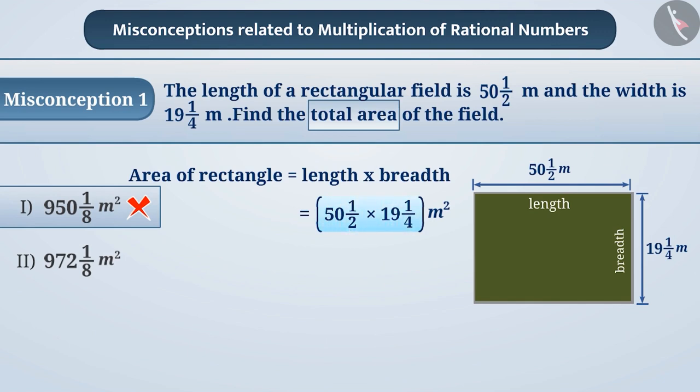Remember that while multiplying such numbers, we must express them in the form of p by q. Like here, we express 50½ as 101/2 and 19¼ as 77/4, and then we multiply these numbers. If we multiply 101/2 with 77/4, we get the answer 7777/8.